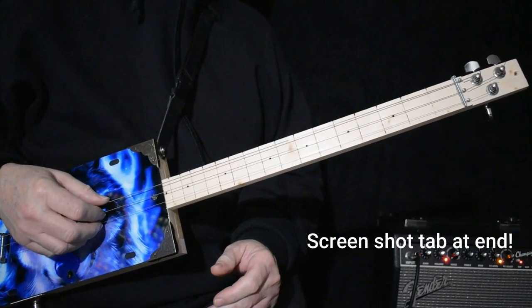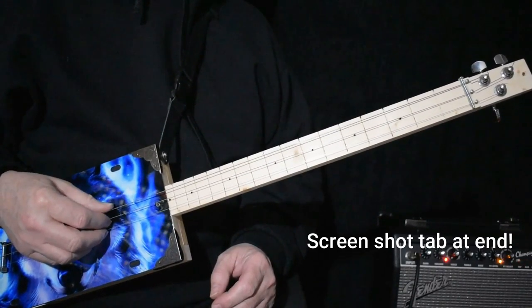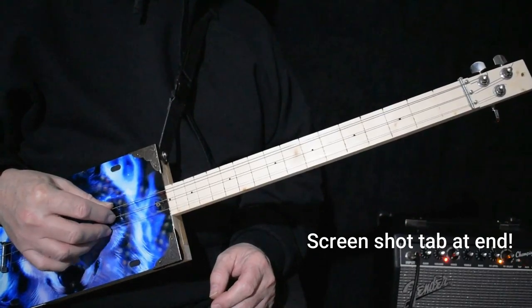Hi, today I'd like to show you a fingerstyle arrangement for Rollin' and Tumblin'. I'm tuned to G, D in the middle, G on the high string.